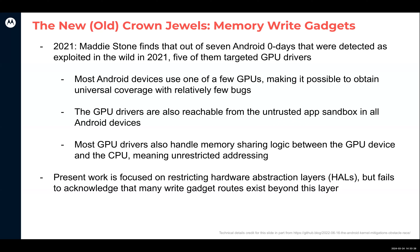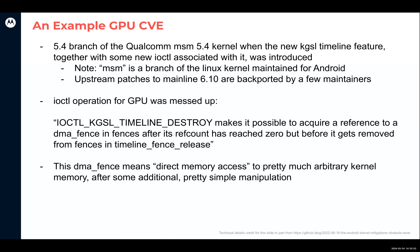A lot of the present work in this domain looks at restricting hardware abstraction layers and restricting where peripheral devices can write, but we'll see that it's not necessarily the restriction of the peripheral device that's so much the issue — it's bugs in the drivers themselves. Let's talk about an example GPU CVE on the 5.4 branch of the Qualcomm MSM kernel, which is the major kernel for mobile devices. We're now on kernel version 6.1, but most devices are actually running 5.10 and 5.15, which really has to do with the Android update cycle.